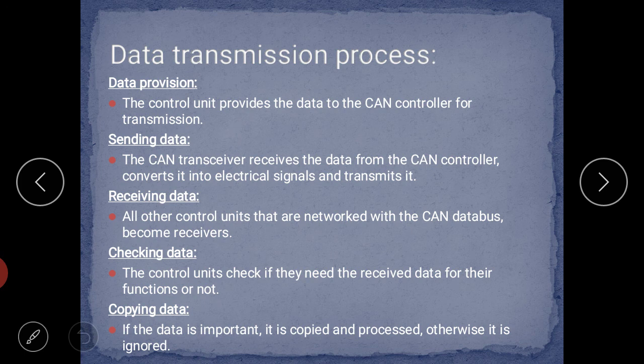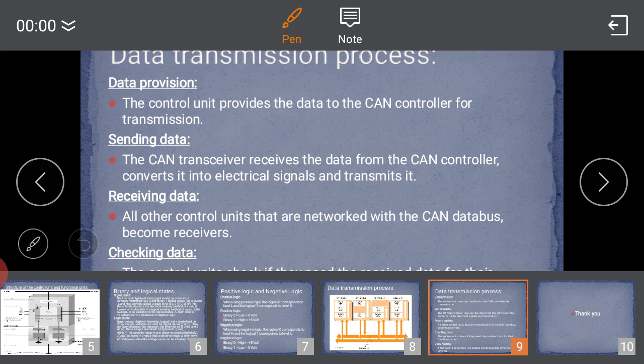Step 5, copying data: if the data is important for that control unit, it is copied and processed; otherwise it is ignored. So there are five steps: data provision, sending data, receiving data, checking data, and copying data. The CAN controller receives data from the microcomputer, the transceiver converts it to electrical signals and transmits it to the CAN bus lines, all connected controllers receive the data, each checks whether it needs it, and those that do copy and process it while others ignore it. That is the basic transmission principle of the CAN data bus system.